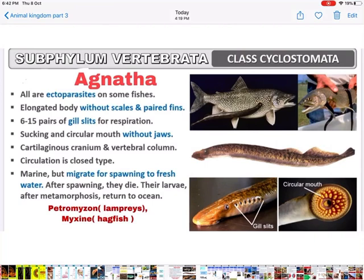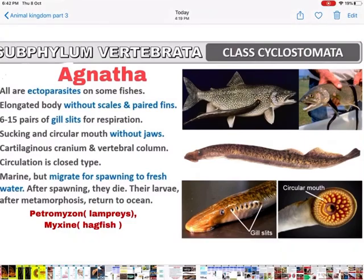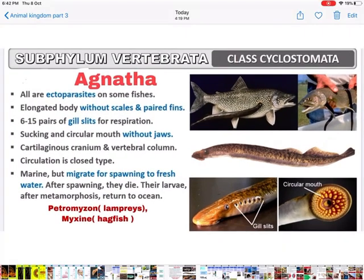Cyclostomata: they are Agnatha — jawless. They are ectoparasites living outside the body of fish. Body is elongated without scales and paired fins. They have 6–15 pairs of gills, and the mouth is sucking type because they are ectoparasites — a sucking type of mouth without jaw.